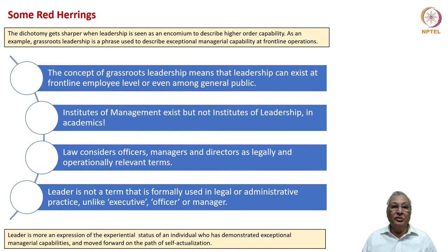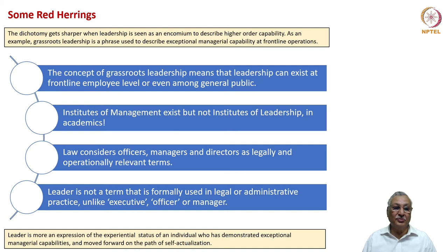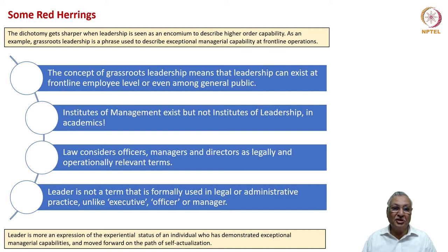But there are also some red herrings. The concept of grassroots leadership reflects that leadership can exist at a frontline employee level or even among the general public. Institutes of management exist, but institutes of leadership do not. Law considers officers, managers and directors as legally relevant terms but does not recognize leaders as operationally efficient terms — executive officer or manager is legally accepted, whereas leader is not formally used in legal or administrative matters. The whole purpose of drawing these red herrings is to suggest that the differences are only semantic.